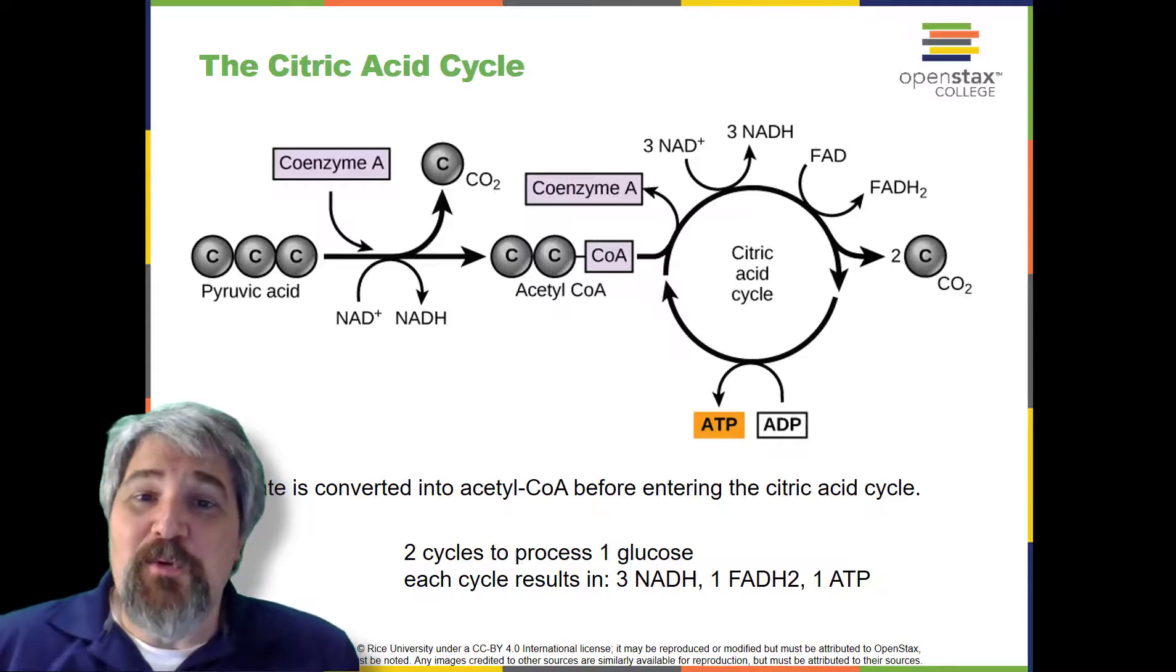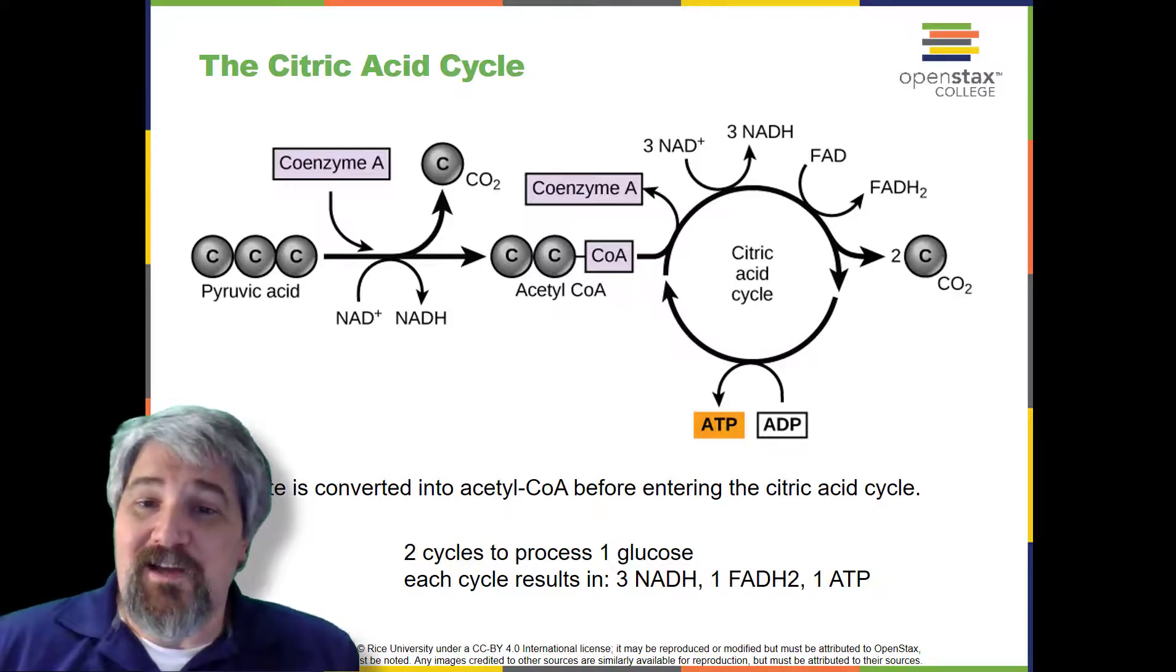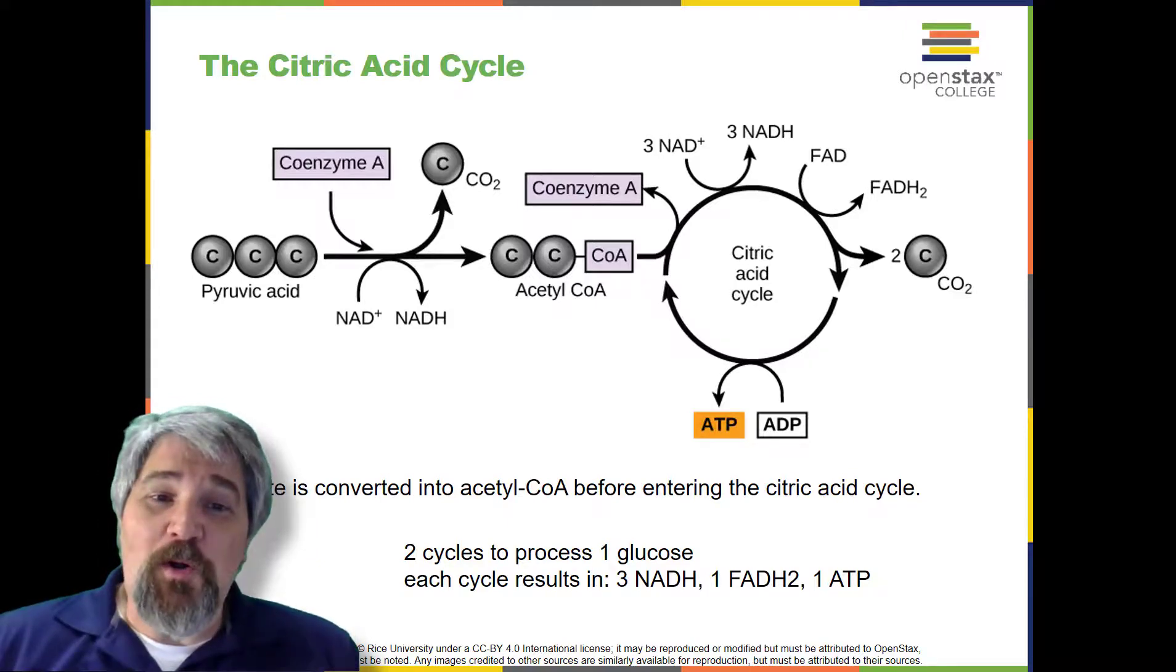Like the conversion of pyruvate to acetyl-CoA, the citric acid cycle in eukaryotic cells takes place in the matrix of the mitochondria. Unlike glycolysis, the citric acid cycle is a closed loop. The last part of the pathway regenerates the compound used in the first step. The eight steps of the cycle are a series of chemical reactions that produce two carbon dioxide molecules, one ATP molecule, or an equivalent, and reduced forms of NADH and FADH2 of NAD+, and FAD+, important coenzymes in the cell.